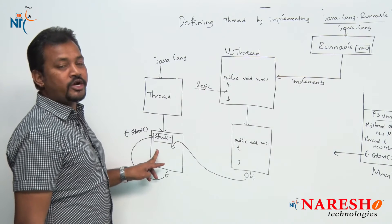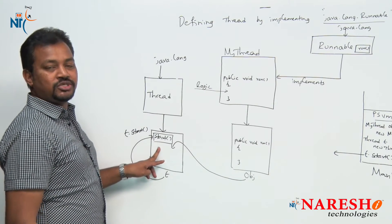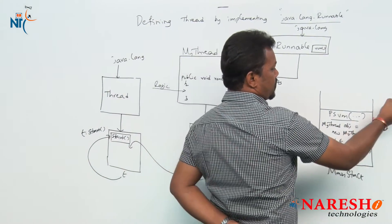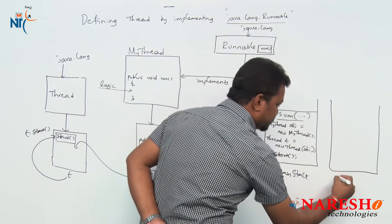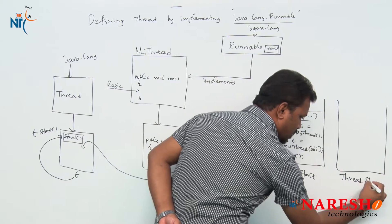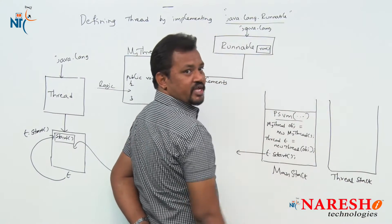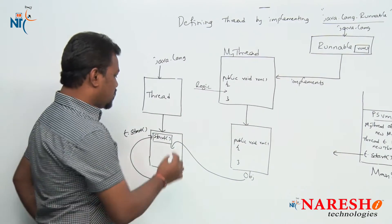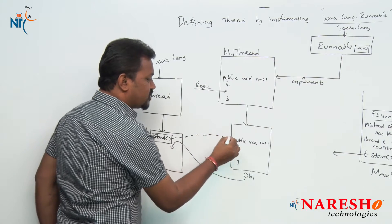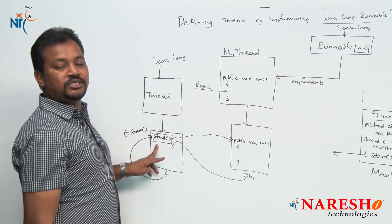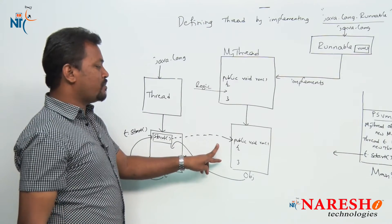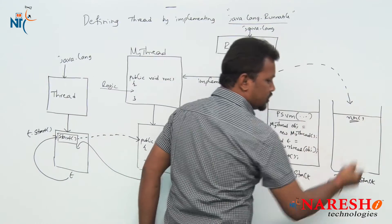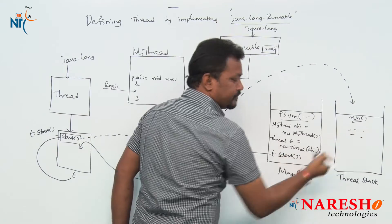Whenever I call t.start(), according to the multi-threading process, start registers the thread within the thread scheduler and creates one separate thread stack. This new stack is called the thread stack. Once the thread stack is created, t.start() activates the run method — nothing but t.start() will invoke this run method — and automatically the run method is copied onto the thread stack for execution.